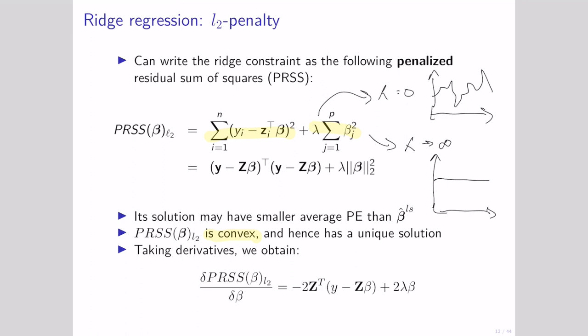One practical note when using ridge regression: some implementations will ask for a value of lambda, and some will ask for a value of 1 over lambda. You'll always want to check that, because you don't want to enter a large value intending to penalize your model and then discover you were doing exactly the opposite.